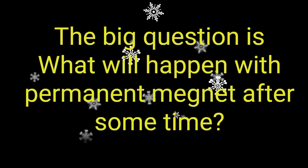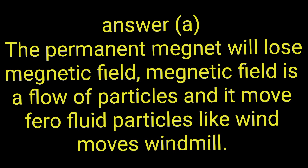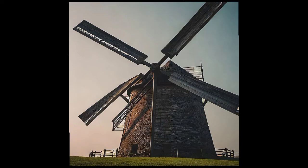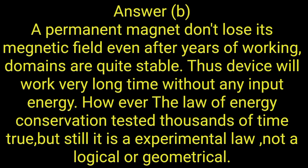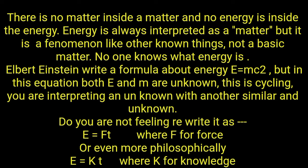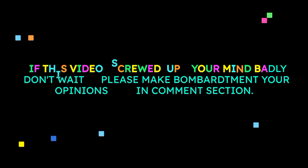The big question is: what will happen to the permanent magnet after some time? Answer A: the permanent magnet will lose its magnetic field, since magnetic field is a flow of particles and it moves ferrofluid particles like wind moves a windmill. Answer B: a permanent magnet does not lose its magnetic field even after years of working — domains are quite stable — thus the device will work a very long time without any input energy. However, the law of energy conservation, though tested thousands of times and true, is an experimental law, not a logical or geometrical one. No one knows what energy truly is. Einstein wrote the formula E equals mc² but in this equation both E and m are unknowns. If this video has challenged your thinking, please share your opinions in the comments section.